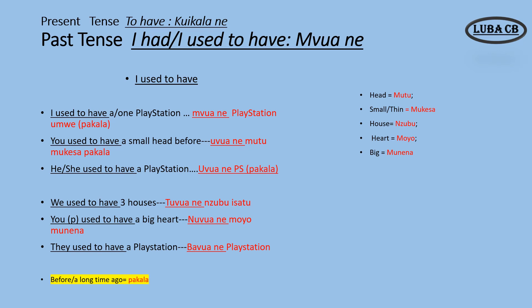We used to have three houses: to one in zubu isa to pakala — meaning a long time ago or before. You used to have a big heart: new one a moyo mo nena. They used to have a PlayStation: ba waa na playstation. Vocabulary: head — mootu; small or thin — mookesa; house — zubu; heart — moyo.